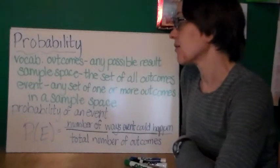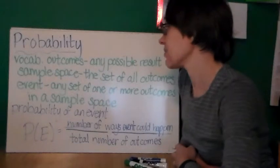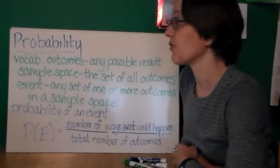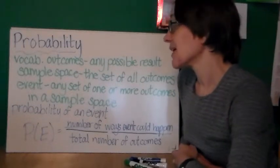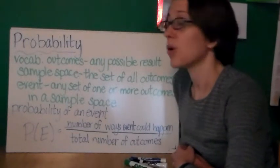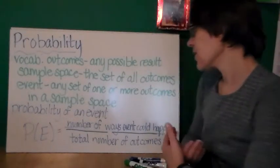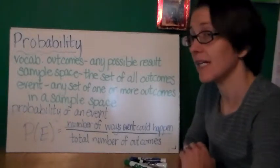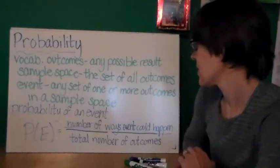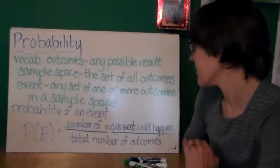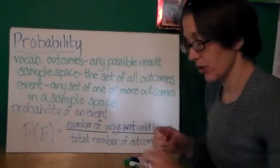The set of all outcomes is called the sample space. So again, the sample space, the set of all outcomes. An event is any set of one or more outcomes in a single sample space. So to determine the probability of an event,